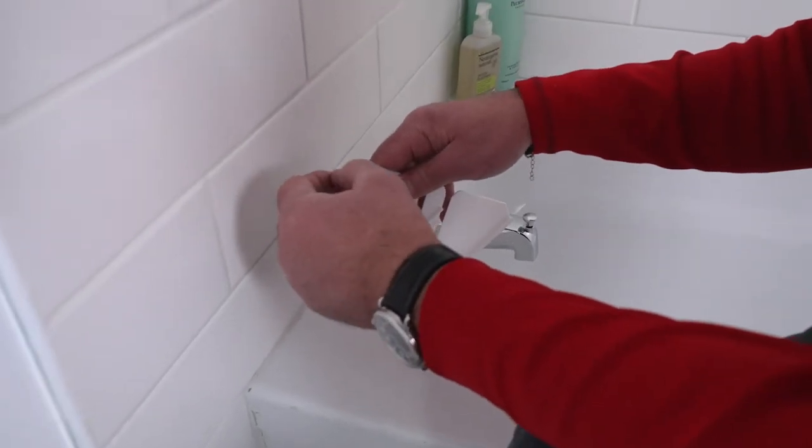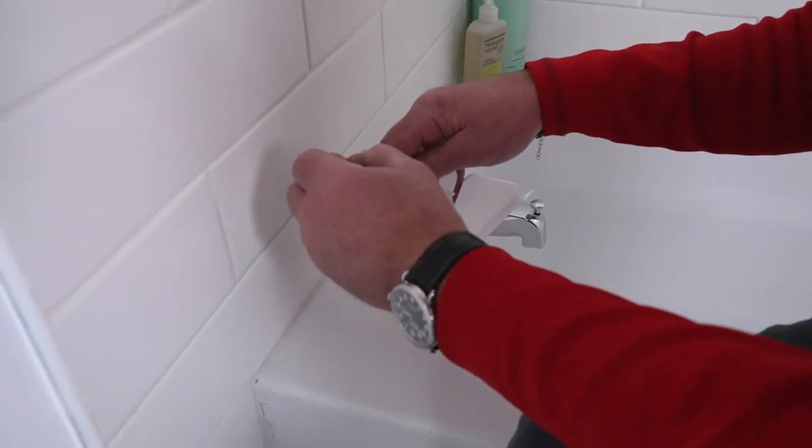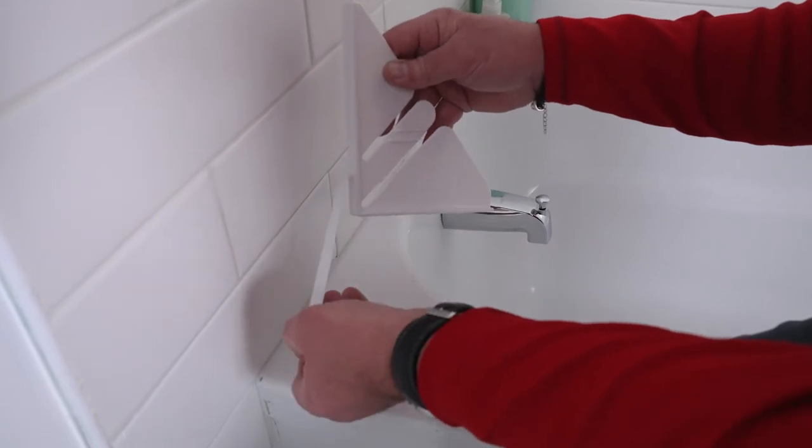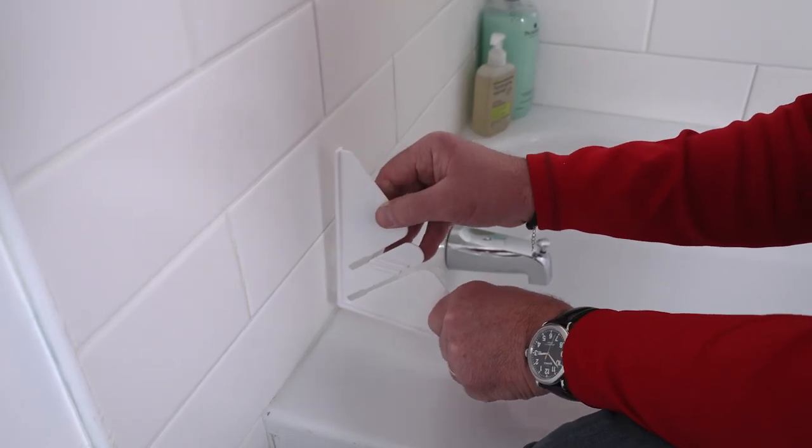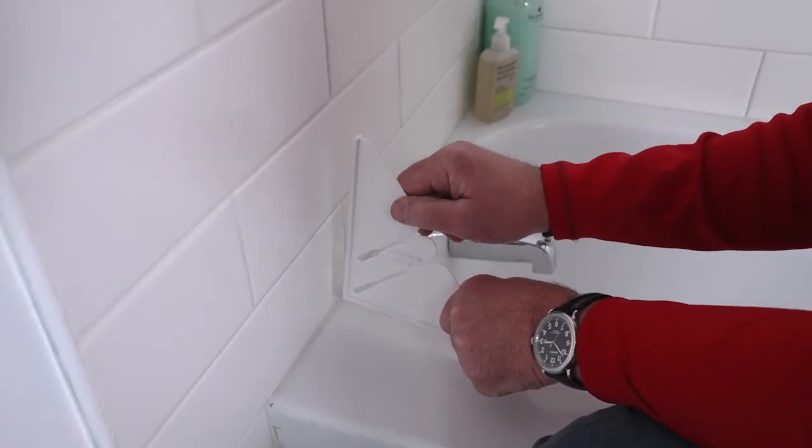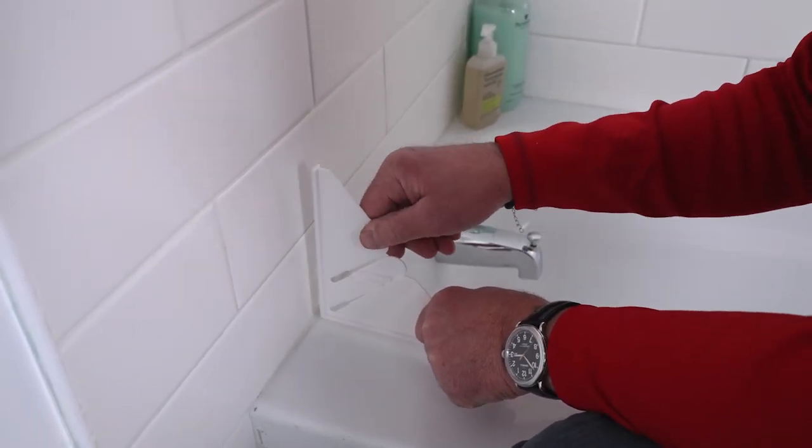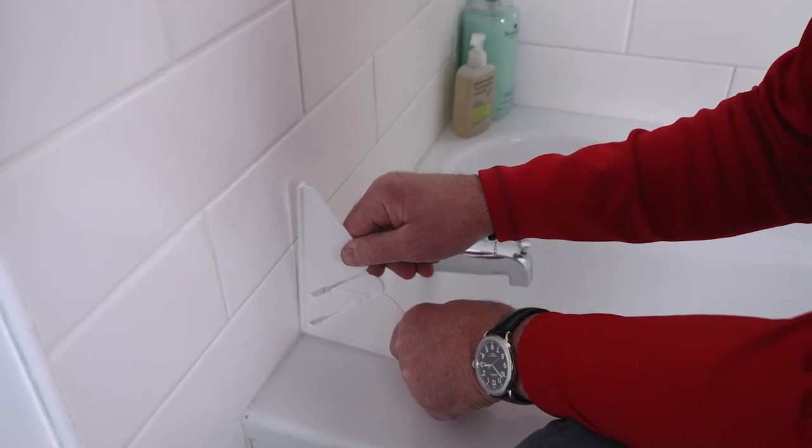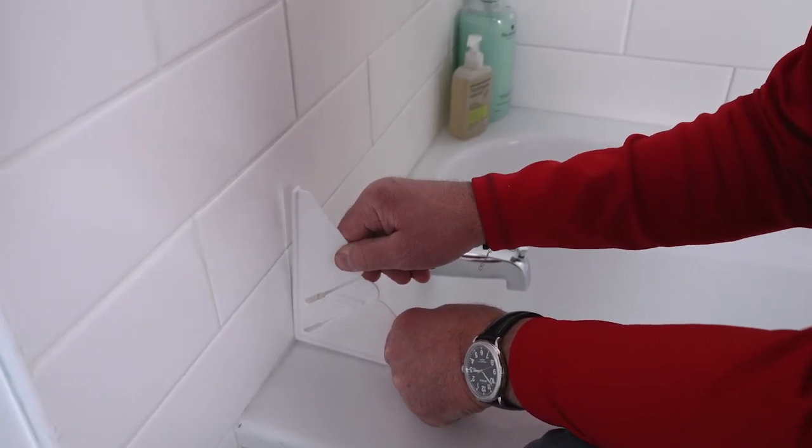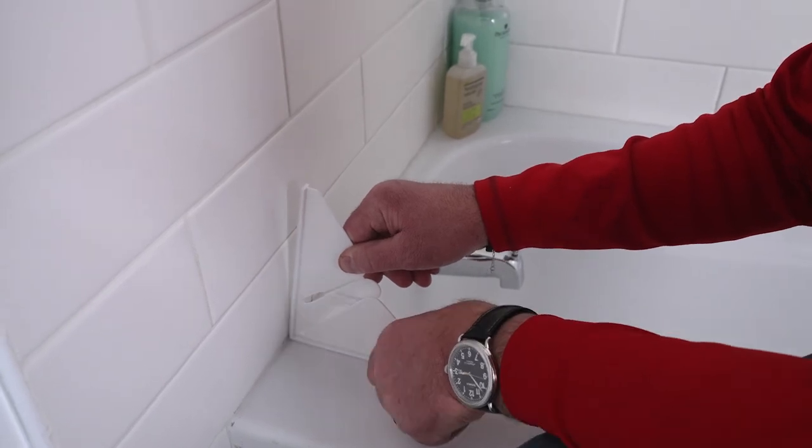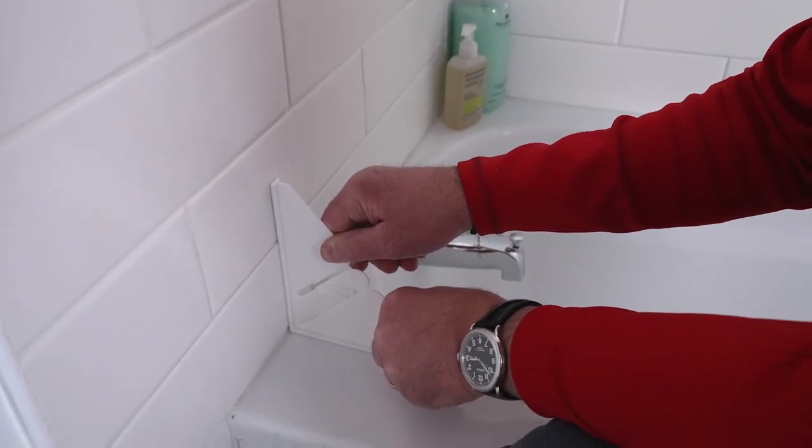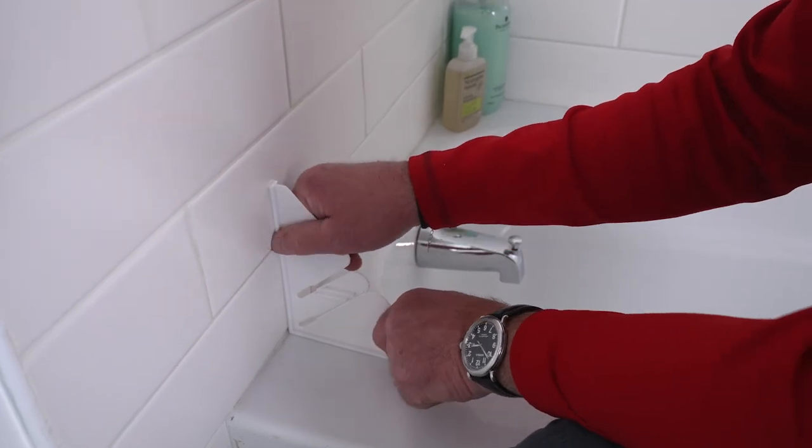Now I'm going to peel the covering off the adhesive and place this. I'll pull this back a little bit so I can get it into that corner and put it down on the tub first and check it, then release this and push it in place.